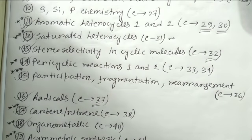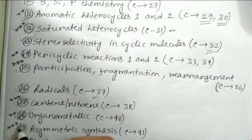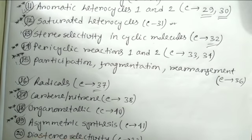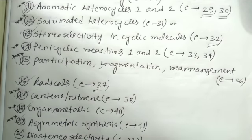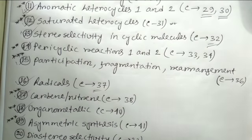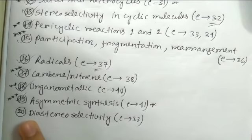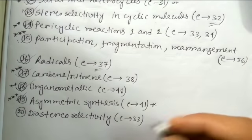Organometallic compounds are covered with all the important things explained in a good mechanistic way. Unlike a standard inorganic chemistry book, in Clayden you get a clear understanding of the reaction and reactivity concepts of organometallic chemistry. For asymmetric synthesis, although not everything is covered, what is given is very important and sufficient for competitive exam preparation - reading the asymmetric reactions in this chapter two or three times will give you a clear understanding. Diastereoselectivity (chapter 33) is also an important related chapter on stereochemistry.